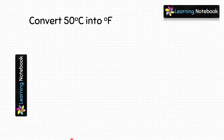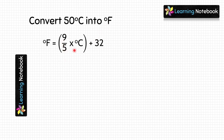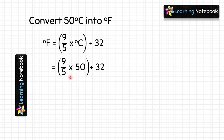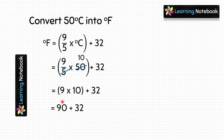Next question is: convert 50 degrees Celsius into Fahrenheit. Let's use the formula and put the value of Celsius here. We get 9/5 into 50 plus 32. First we will solve 9/5 into 50 — simplify it and we get 9 into 10 plus 32. Now solve the multiplication: 9 into 10 is 90, and then we will add 32 to 90. We get 122. So the answer is 122 degrees Fahrenheit.